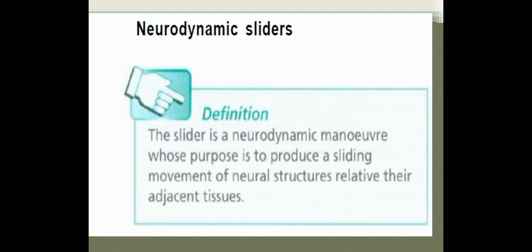Neurodynamic sliders — what does this mean? A slider is a neurodynamic technique whose purpose is to produce a sliding movement of the neural structures relative to their adjacent tissues. When we are mobilizing the nerve and there is production of a sliding movement of the neural structure, that is called a neurodynamic slider.